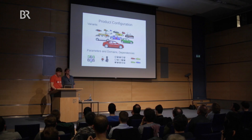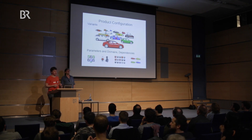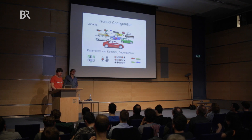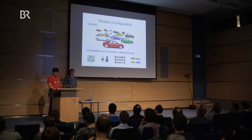For example, you select that the car has an electrical engine. And of course there are dependencies to other parameters. For example, there's only an automatic gearbox for electrical engines, and also some types of cars are ruled out — marked by the red crosses. There might also be some steering wheels not possible for automatic gearbox. And you can then select other parameters like the color, which also rules out further possibilities.